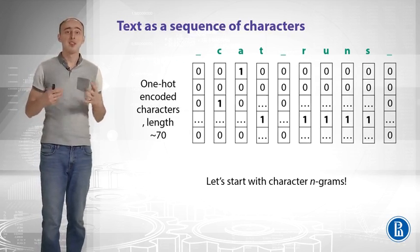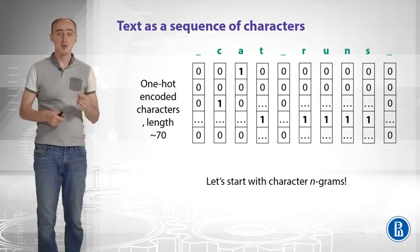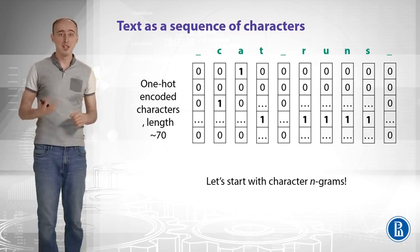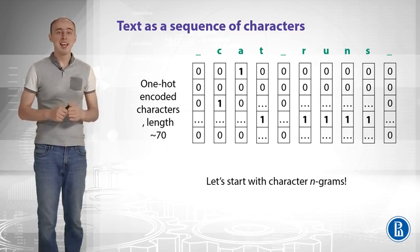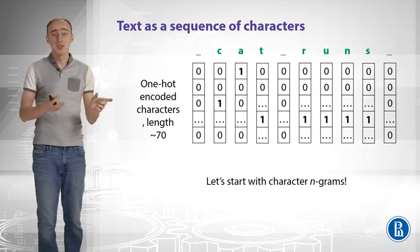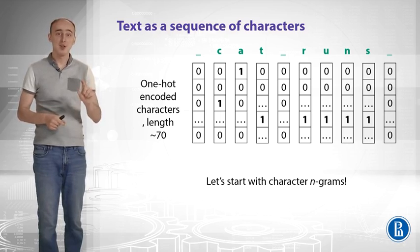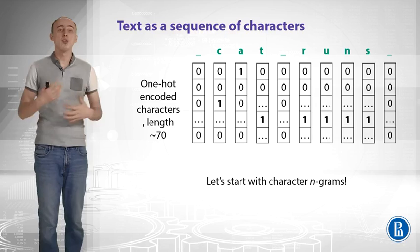How can we treat text as a sequence of characters? Let's take an example phrase, cat runs, with underscores for white space. It is easy to tokenize our text into characters. Then we can embed each character into a vector of length, let's say 70, in a one-hot encoding manner.